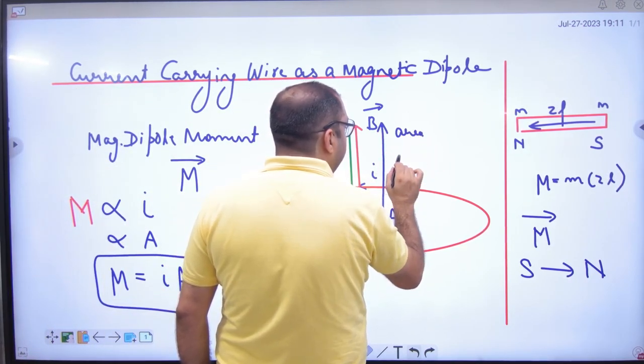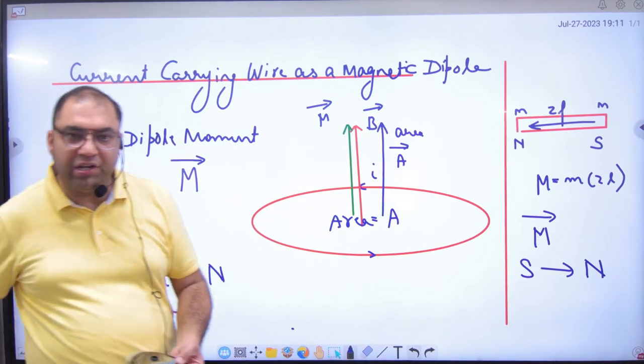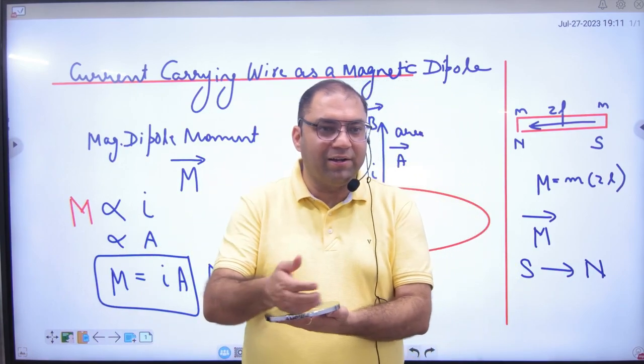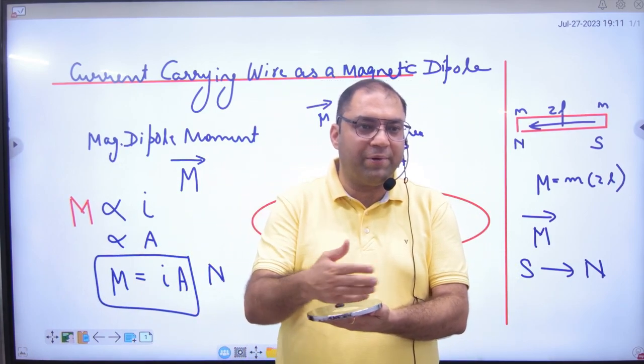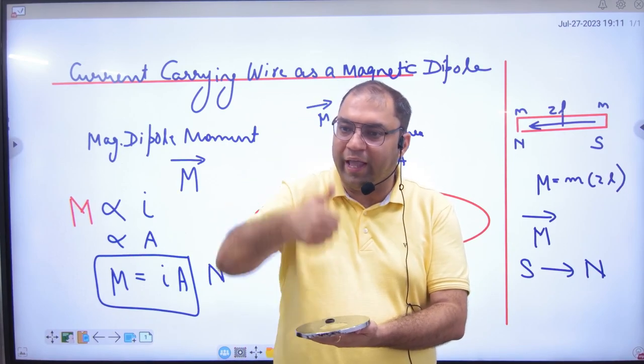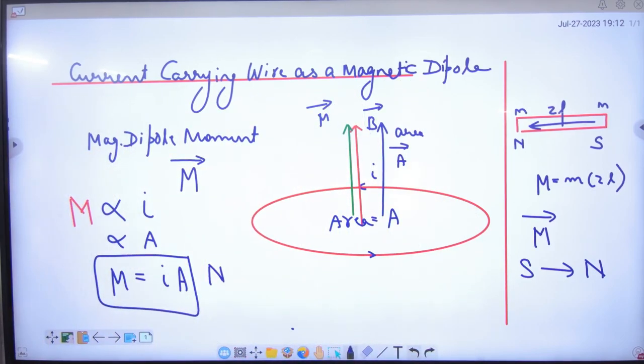And the area-vector will be the same. The current is running, four fingers, thumb up. This is B, this is capital M, and this is area-vector. The same rule applies.